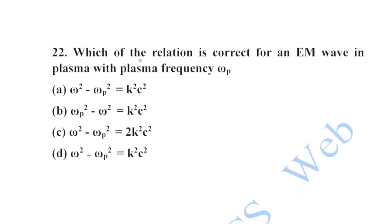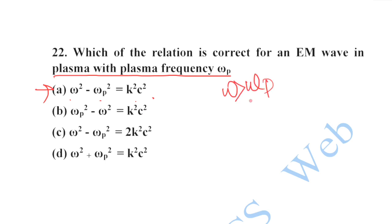Next: the correct relation for an electromagnetic wave in plasma with plasma frequency ω_p is ω² - ω_p² = k²c². Option A is your correct option. For ω greater than ω_p, the wave propagates in the plasma.